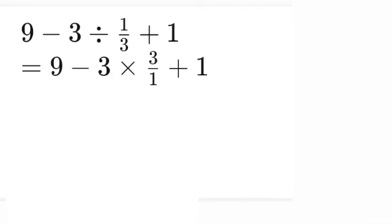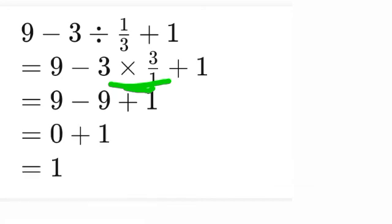3 times 3 is 9, plus 1. So 9 - 9 + 1 = 0 + 1, and the answer is 1.